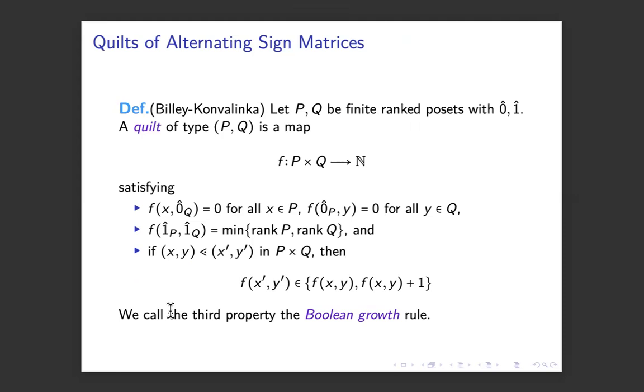We said, okay, well, so sometimes we have chain by cross chain, sometimes we have boolean cross boolean, sometimes we have chain cross boolean, well, why stop there, why not just take an arbitrary two posets, finite posets, and let's say with a rank function and an absolute minimum, a unique minimal element zero hat and a unique maximal element one hat. And we're going to define a quilt of type p comma q to be a map, which is a function from p cross q, as a product of posets, to the natural numbers.